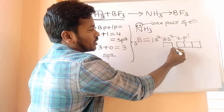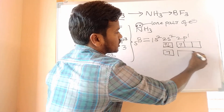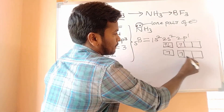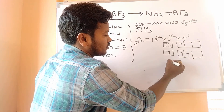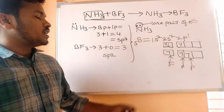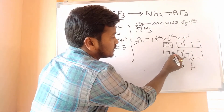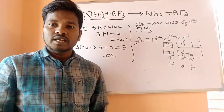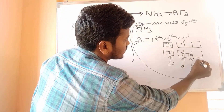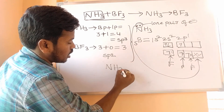In the ground state, when energy is given, excited state is reached and bond formation occurs. Fluorine atoms form bonds with boron. After forming bonds with fluorine, boron contains only six valence electrons. To achieve stability, eight valence electrons are required. So the lone pair of electrons on nitrogen donates to boron — this is indicated as a coordinate bond, also called a dative bond.